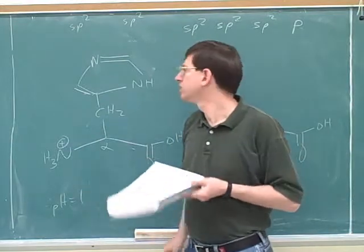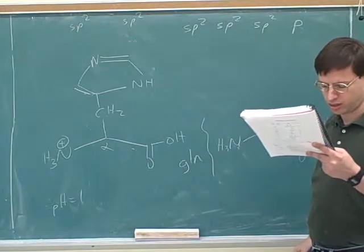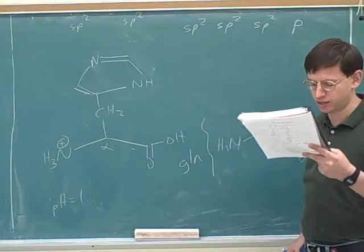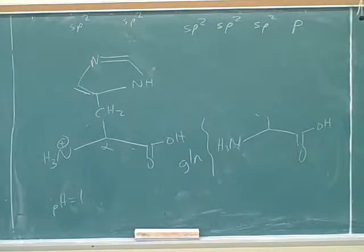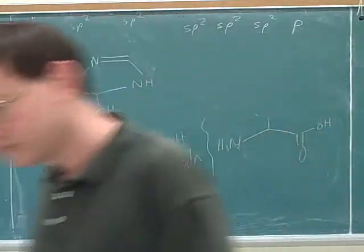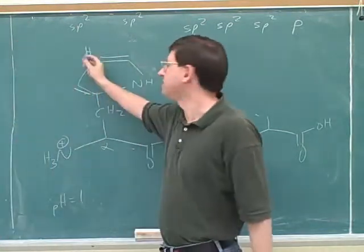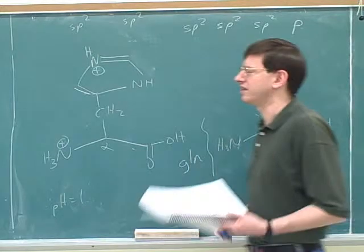At a very low pH — a pH of 1 — how do I fix this to make it look right? At a very low pH, we would expect to protonate the side chain. The key thing is to remember this is the nitrogen that protonates, not the other one, because this is the one with the lone pair not participating in the aromatic overlap.